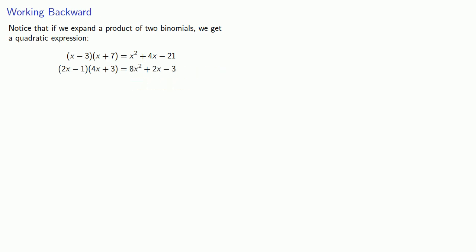So if we have a quadratic expression, we might be able to factor it as a product of two binomials. If we start with x squared plus 4x minus 21, we could rewrite it as the product. And if we start with 8x squared plus 2x minus 3, we can factor it as 2x minus 1 times 4x plus 3.